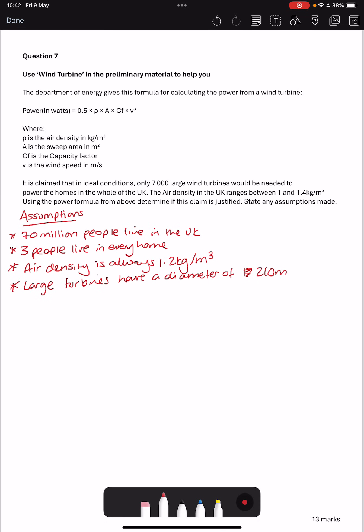So I'm going to say large turbines have a diameter of 210 metres. Then the capacity factor. Using the preliminary material and the fact that this question is talking about ideal conditions, we want a capacity that is the higher end. So we're going to say capacity factor is 40%, which is the higher end for our preliminary material.